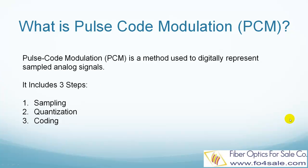Hello everyone, this is Colin from Fiber Optics for Sale. In this video, I will explain what is PCM, which stands for Pulse Code Modulation. In a brief sentence, Pulse Code Modulation is a method used to convert an analog signal into a digital signal, so that it can be transmitted through a digital communication network and then converted back into the original analog signal.